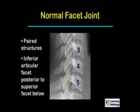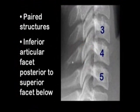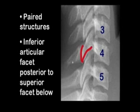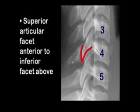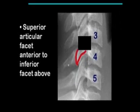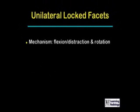The facets are paired structures. The blinking red line is pointing to the inferior articular facet of C4, which is posterior to the superior articular facet of the vertebral body below it, indicated by the blinking blue line. The superior articular facet of C5 lies anterior to the inferior articular facet above — that is the normal relationship of the inferior and superior articulating facets.